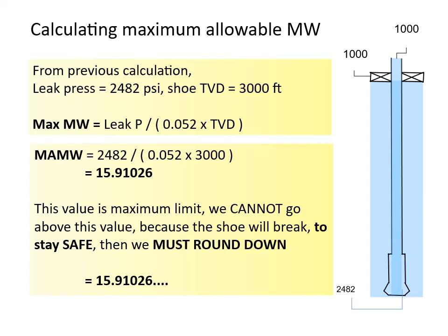This value is maximum limit, we cannot go above this value because the shoe will break. To stay safe, then we must round down. So we keep only the first decimal, and our maximum allowable mud weight is 15.9 ppg.